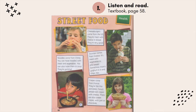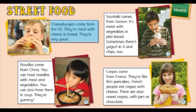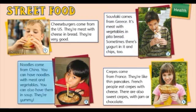Next, look at your textbook, page 58. Now let's listen and read. Street food: cheeseburgers come from the US — they're meat with cheese in bread, they're very good. Suvlaki comes from Greece — it's meat with vegetables in pita bread, sometimes there's yoghurt in it, and chips too. Noodles come from China — you can have noodles with meat and vegetables, or also in soup.